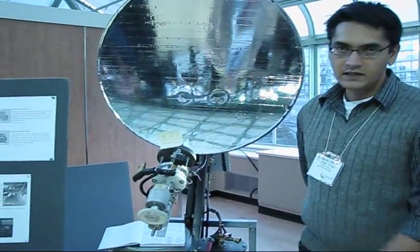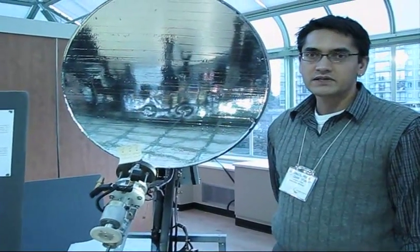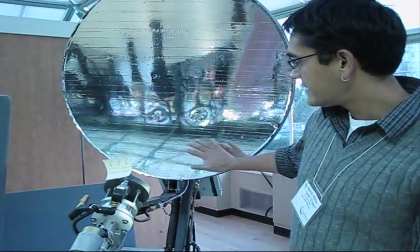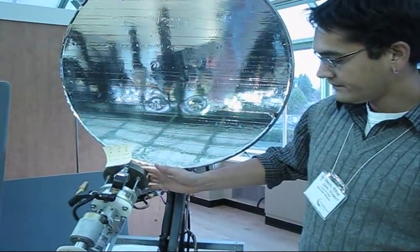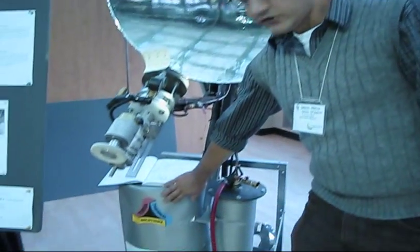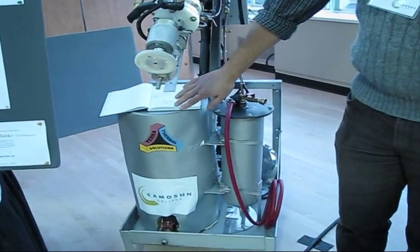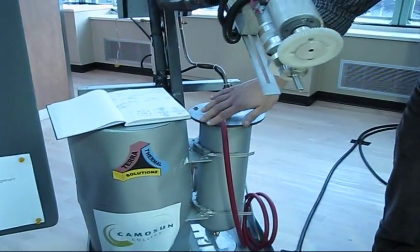It is an organic Rankin cycle, a power generating plant. It captures thermal energy and converts it into electricity. There are two thermal inputs: the solar collector here in conjunction with the solar boiler, and there's also an electric boiler here as well. This is simulating waste industrial heat and or a geothermal hot spring source.